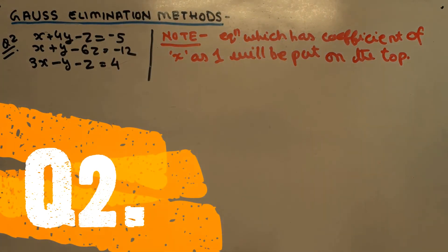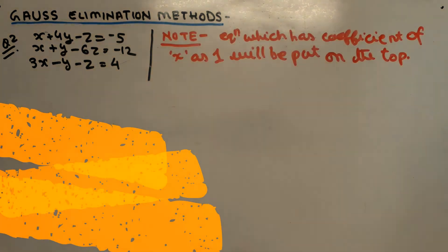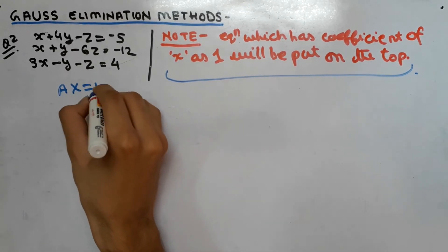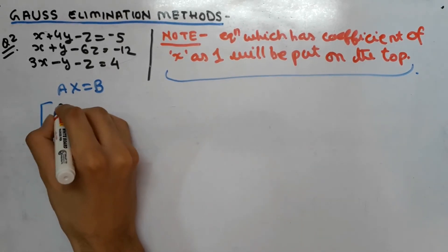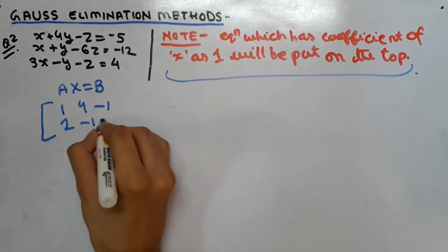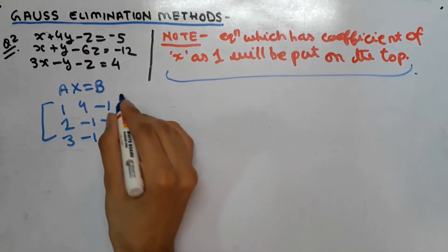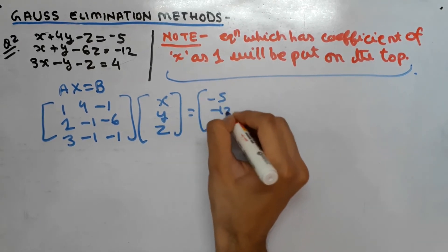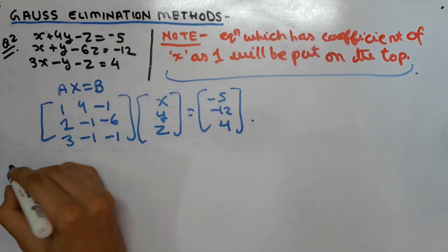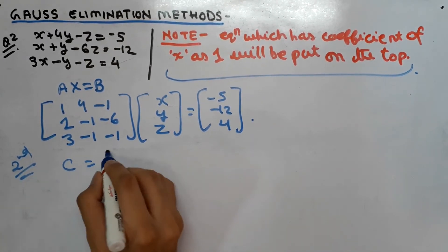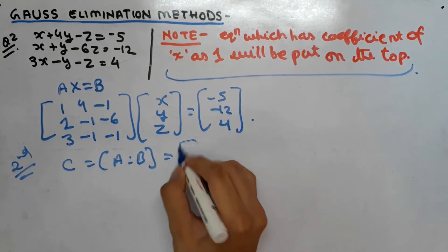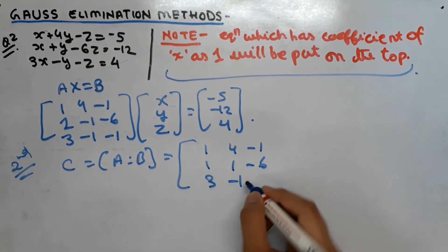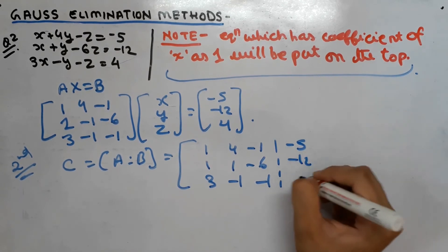In question number 2, we have to find the values of x, y, and z using Gauss elimination method. The first step is to convert the system into matrix form Ax = b. Matrix A is [1, 4, -1; 1, -1, -6; 3, -1, -1], matrix x is [x, y, z], and matrix b is [-5, -12, 4]. The augmented matrix C = [A : B] is then: 1, 4, -1; 1, -1, -6; 3, -1, -1 with B column: -5, -12, 4.